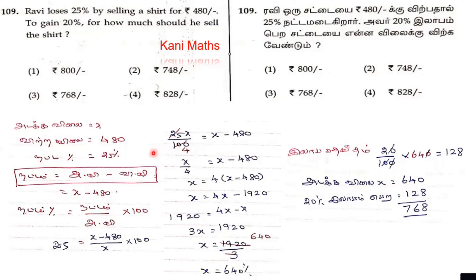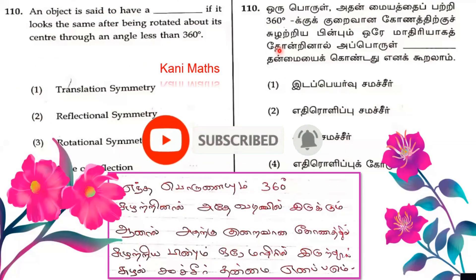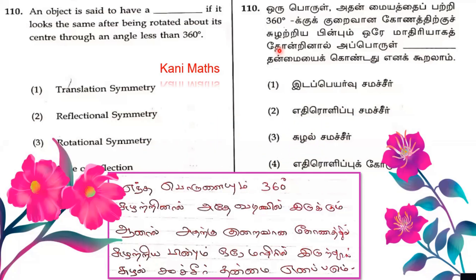20 percent. An object is centered — it looks the same after being rotated about its center through an angle less than 360 degrees. Option 1: Translation Symmetry. Option 2: Reflectional Symmetry. Option 3: Rotational Symmetry. The answer is Rotational Symmetry, option 3.